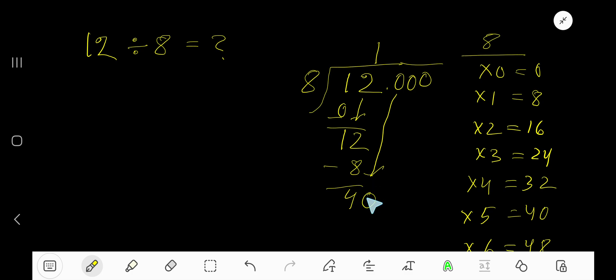Bring down the first 0, so we have 40. 8 goes into 40 how many times? 8 goes into 40 five times. But before this 0 there is a decimal, so the decimal must come up to the quotient directly.